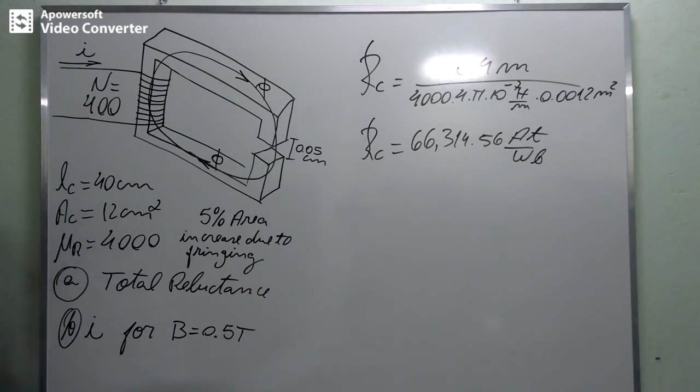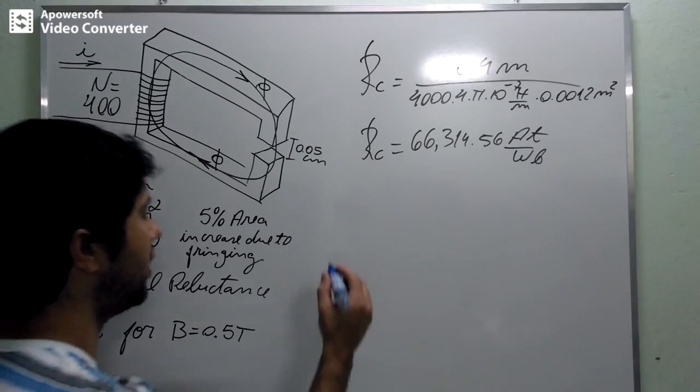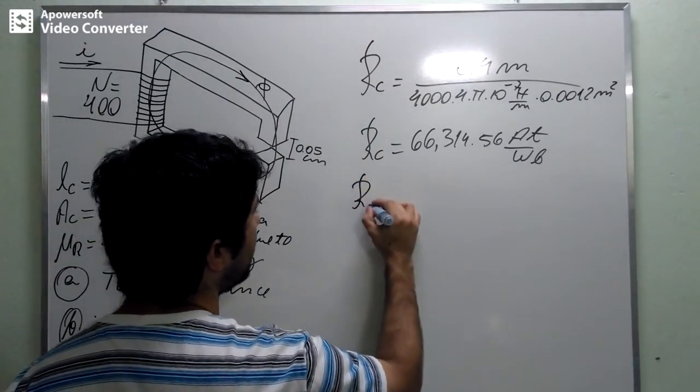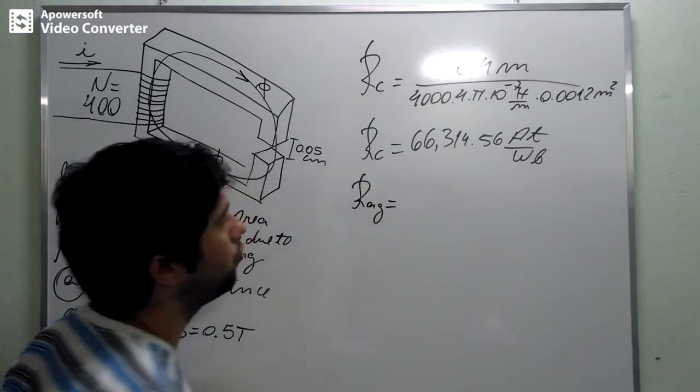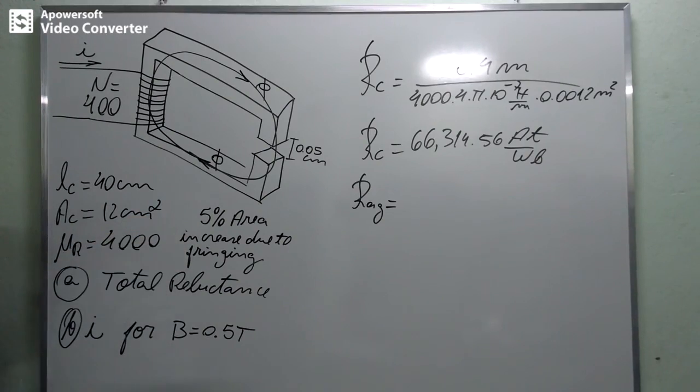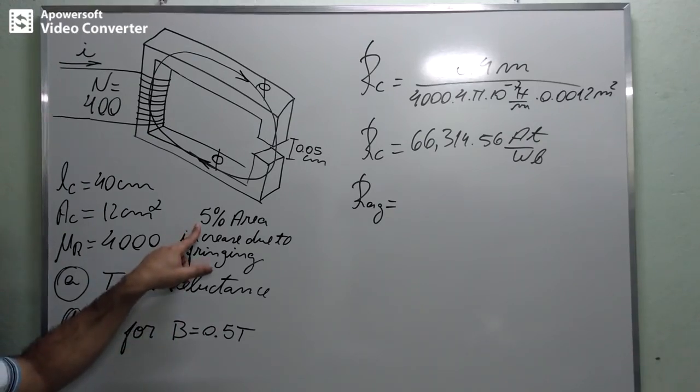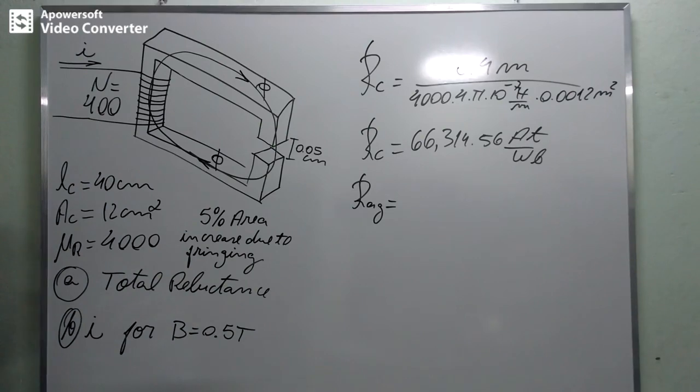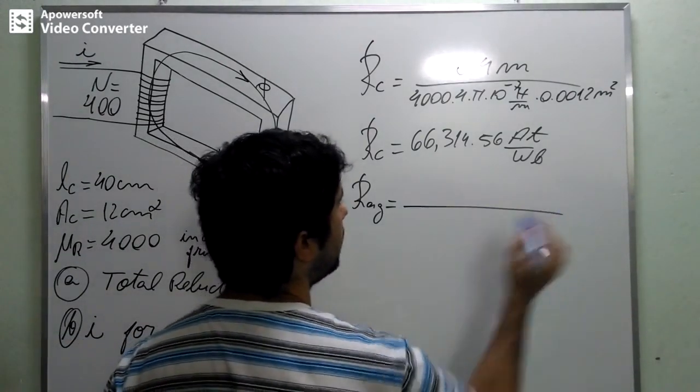Now, we know this. Now, we are going to calculate the reluctance of the air gap. The reluctance of the air gap is going to be a little bit different because we have to consider this, the fringing effect in the air gap. And it's going to increase the area by 5%. And we have then to multiply the area by 1.05. Let's just calculate it.